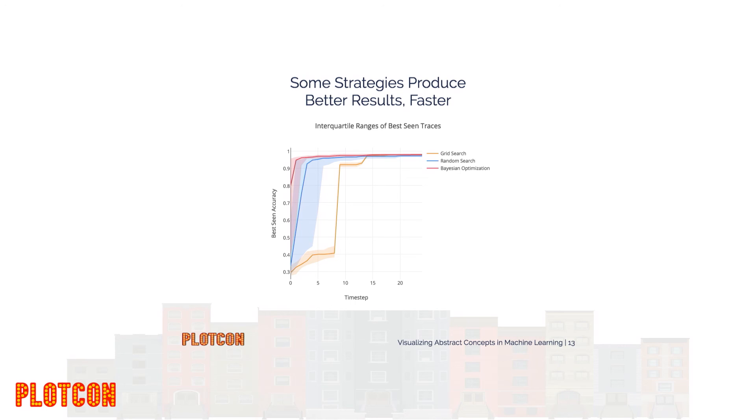We can layer these graphs together and get a better picture of how these strategies compare. We want to consider how fast the graph shoots up. We can see that Bayesian optimization is outperforming grid search and random search — if you go all the way out to the end, the values for Bayesian optimization are close and slightly higher than random search and grid search. But the pink line achieves these results much faster, so you get faster results, better results, and with less time.